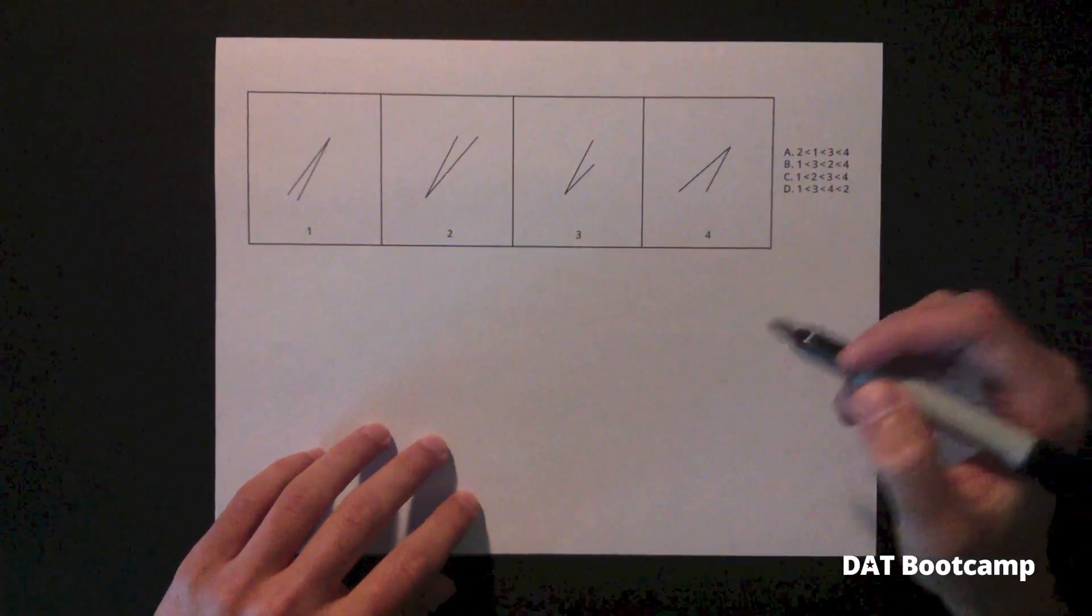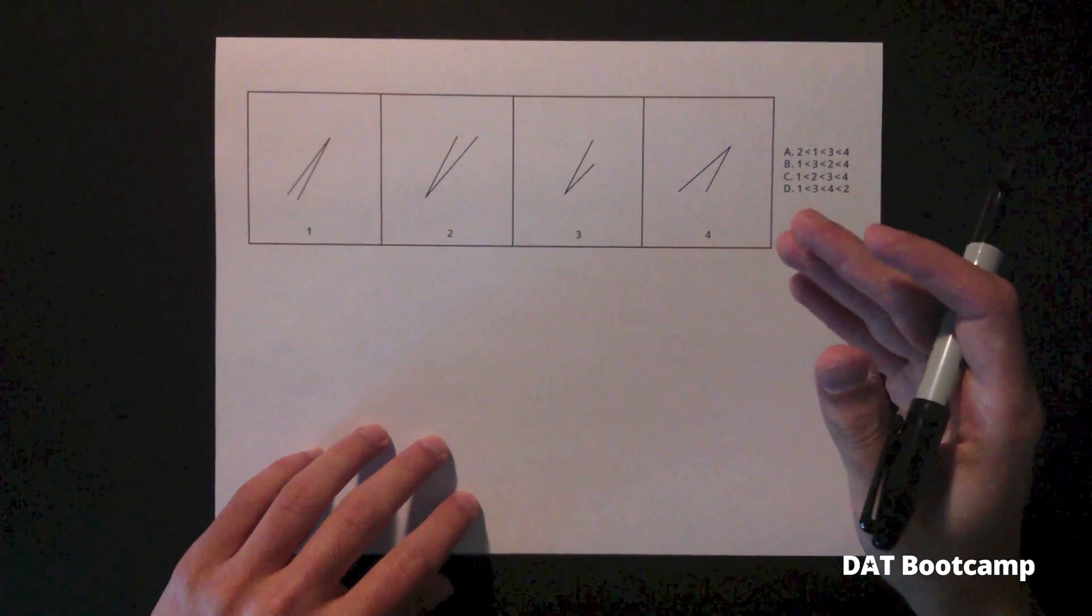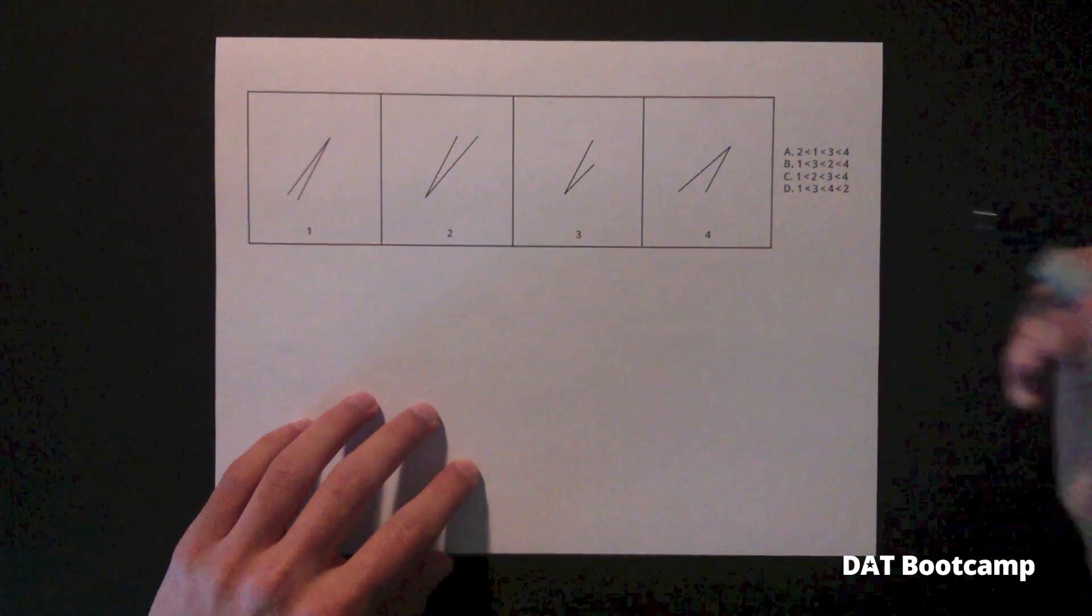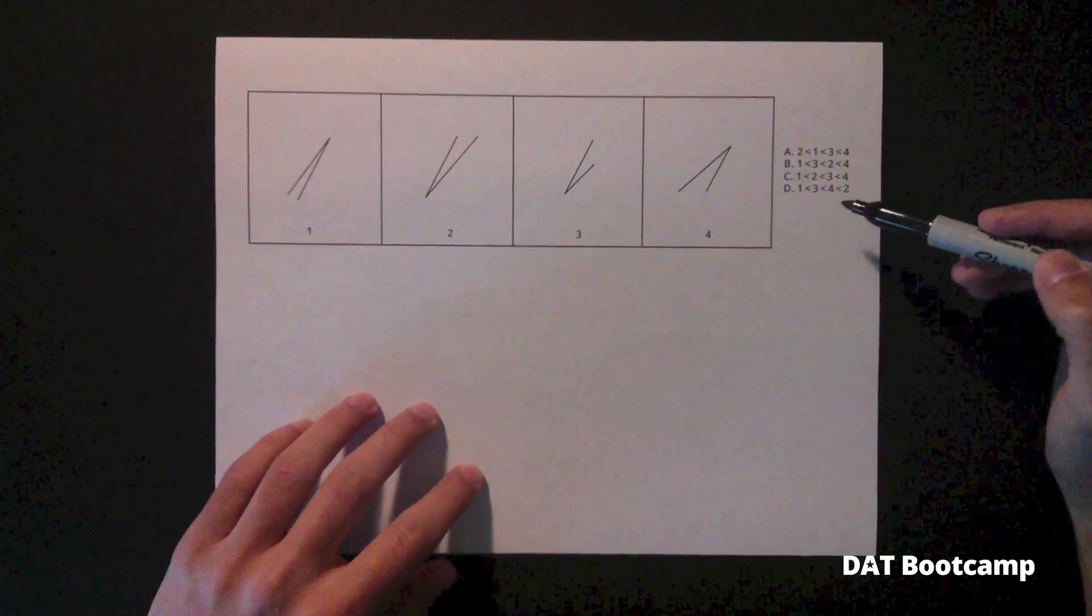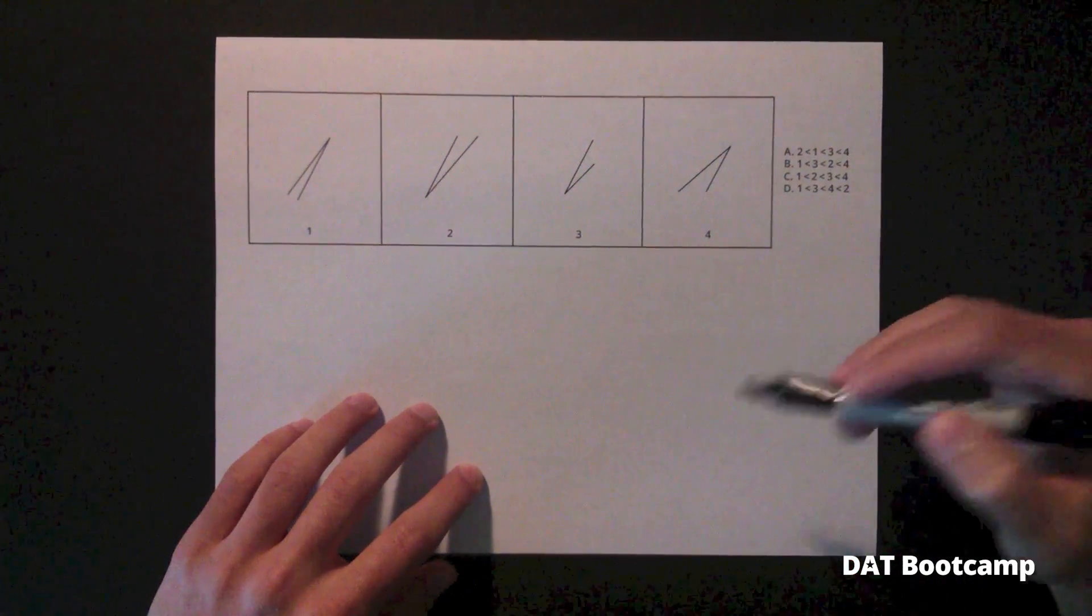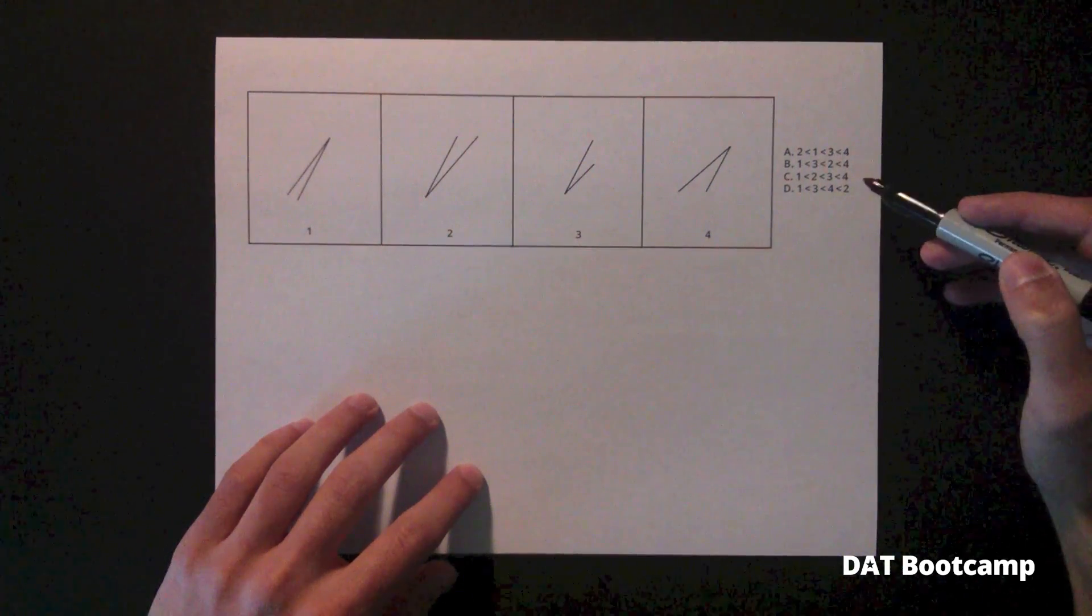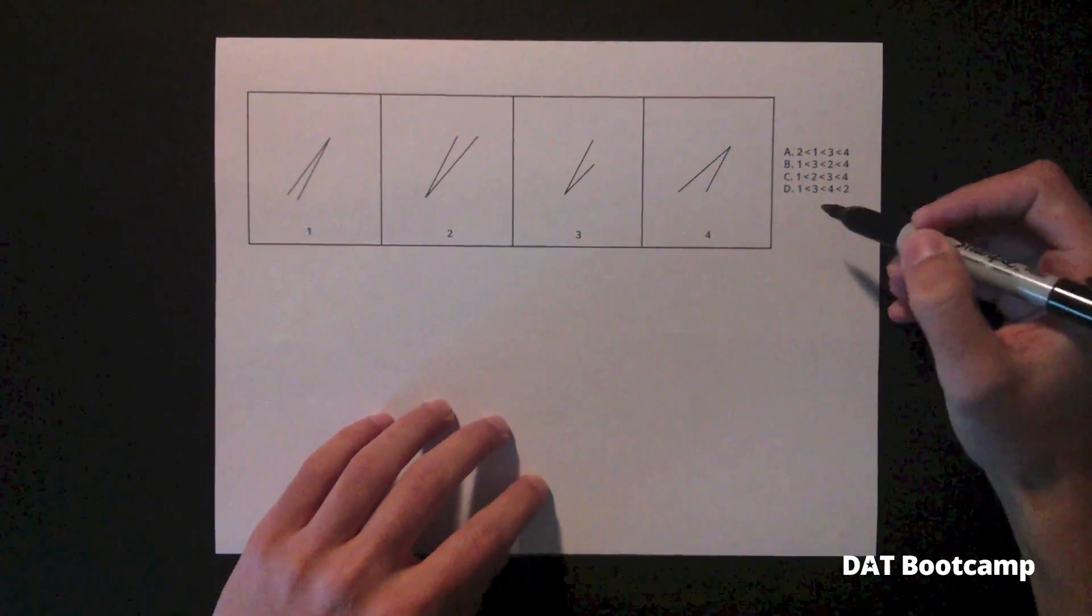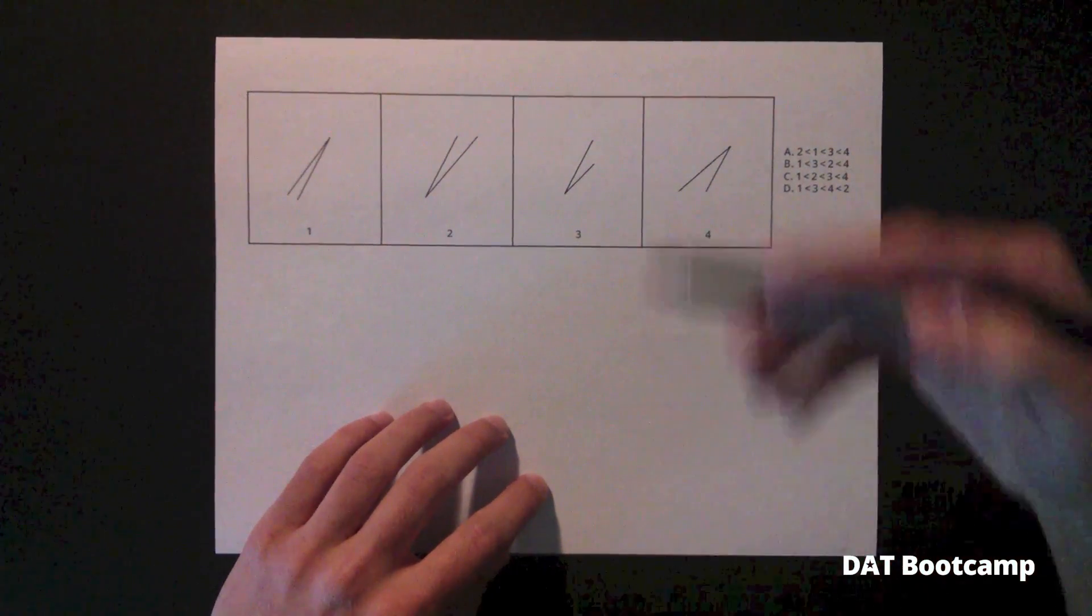All right, so let's move on to a more advanced example so we can discuss some of the strategies involved. The first strategy we saw was that you always go directly to the answer choices. On the DAT, you always want to go directly to the answer choices for the perceptual ability section. This is going to allow you to eliminate answer choices rather than finding the correct answer choice.